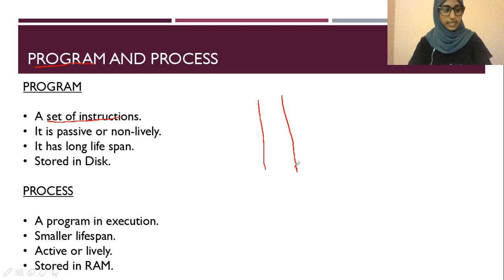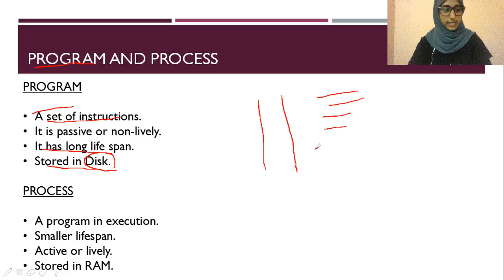A program has a long lifespan and is stored on disk — that is, in secondary memory. When you write a C program and have some lines of code, that code is what we call a program.